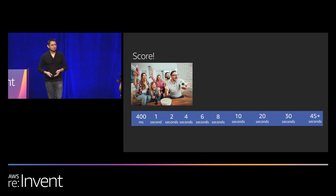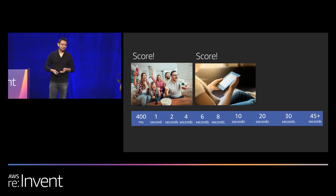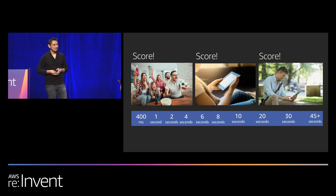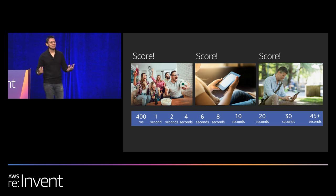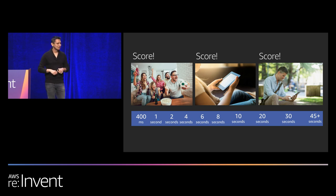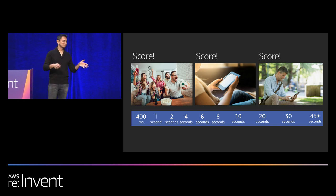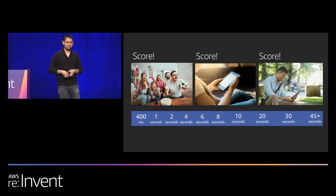Another thing that matters when you're doing live sports is latency. You want to get information in front of the viewer's eyes as quickly as possible, because what really sucks is if you're having a football viewing party and your neighbors start cheering for the touchdown before it's on your screen. So latency starts to matter a lot.